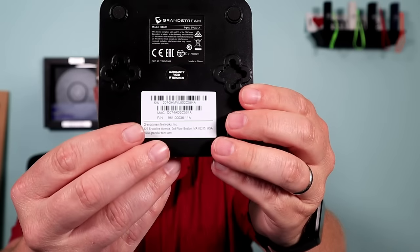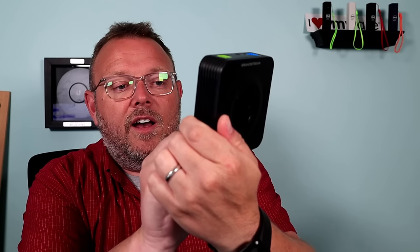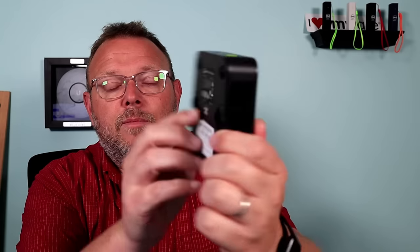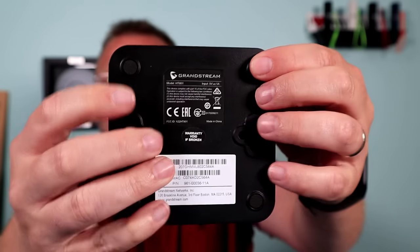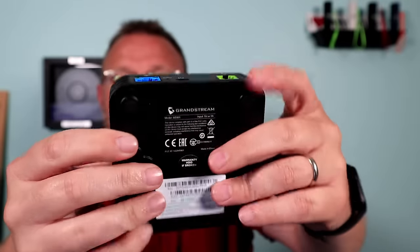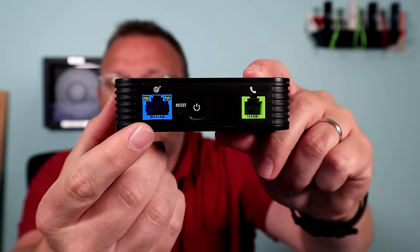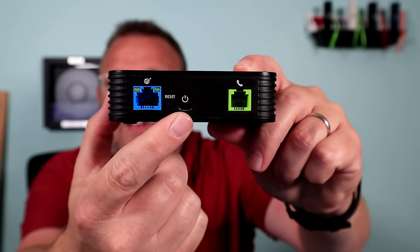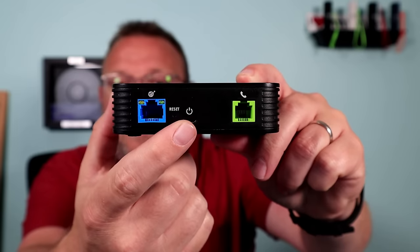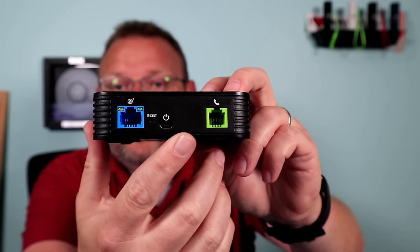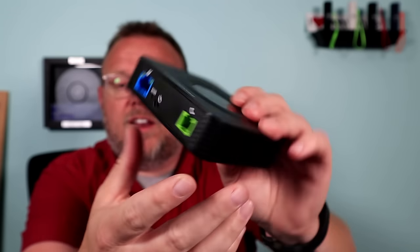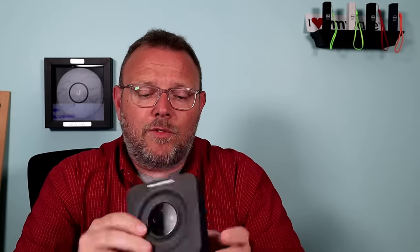On the back, you can see we've got a MAC address, part number, serial number. We've got our mounting holes here, our feet, if you're going to set it on the desk, all of your FCC information. Then on the back, you've got your Ethernet. You've got a reset. You've got a power plug here, and it is USB. It's not USB-C. And then you've got where you plug your analog line in. So it's a very simple, very lightweight device.